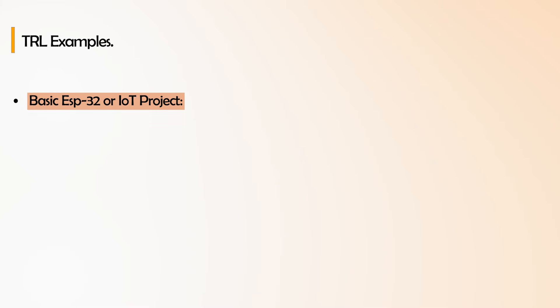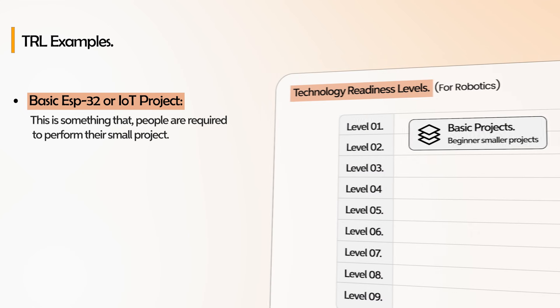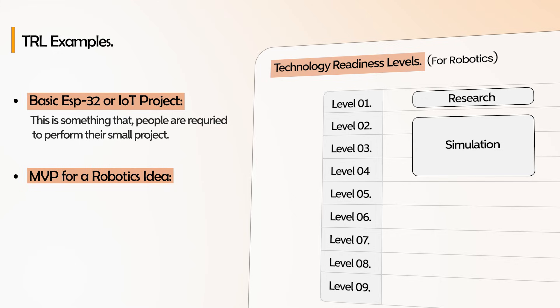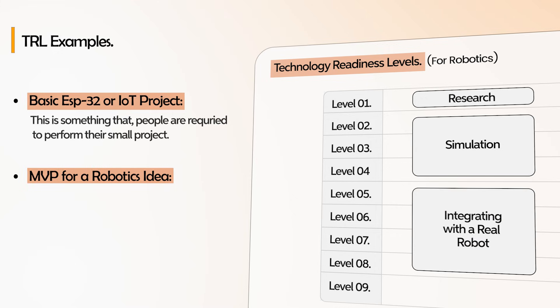What is TRL? Starting from the very basic example: you start with a basic ESP32 robot or IoT project. This is something that people do for their small projects — I would put that at TRL 1 and 2. Something that is not going to be in production ever, just to complete some idea or research. Then comes the MVP for a robotics idea: you research at TRL 1, then you start doing simulation at TRL 2, 3, 4, and then you start integrating with the real robot at TRL 5, 6, and above. TRL 9 is something production-grade.